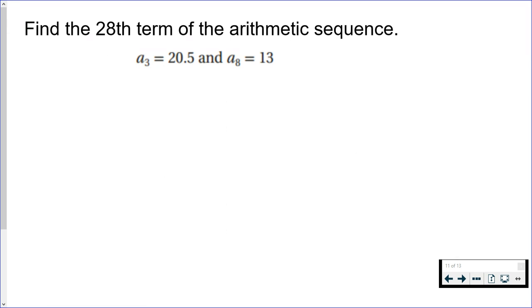The third term and the eighth term are not right next to each other. If you add the common difference once to the third term, we would be at the fourth term. If you add it again, you're at the fifth term, sixth, seventh, eighth. So if you were to add the common difference five times, you would get from the third term to the eighth term. These are five apart from each other.